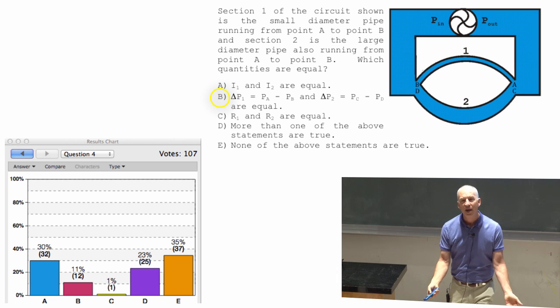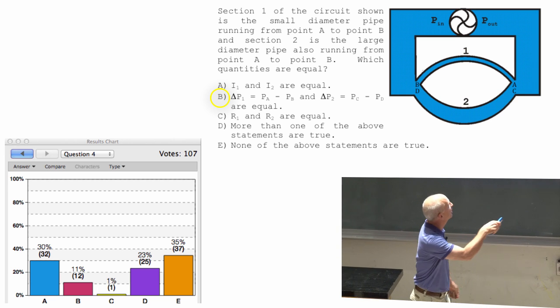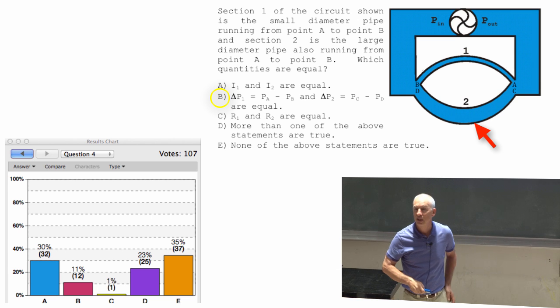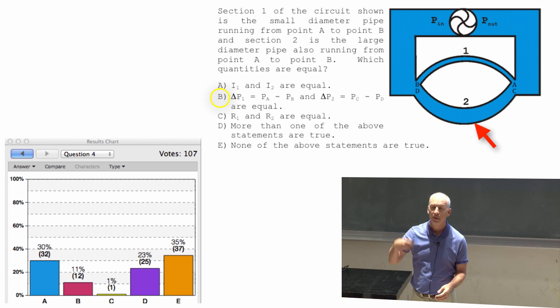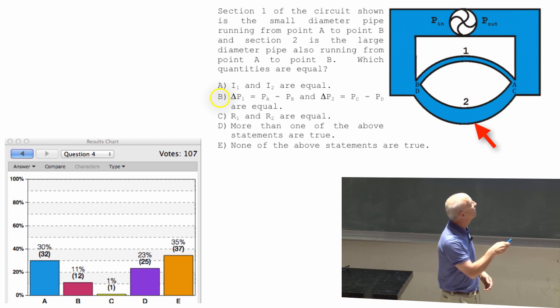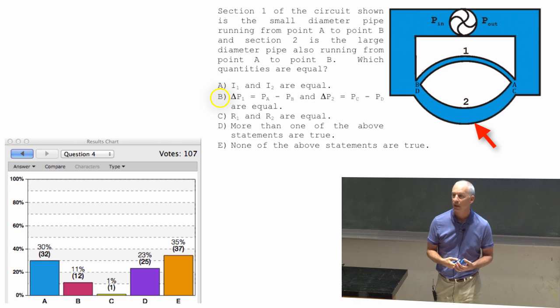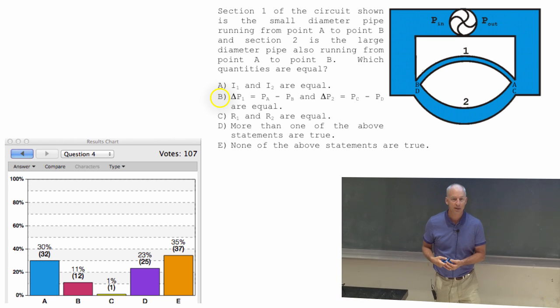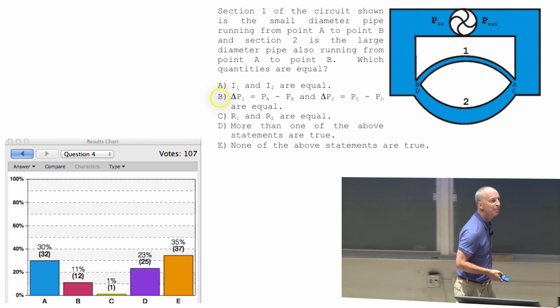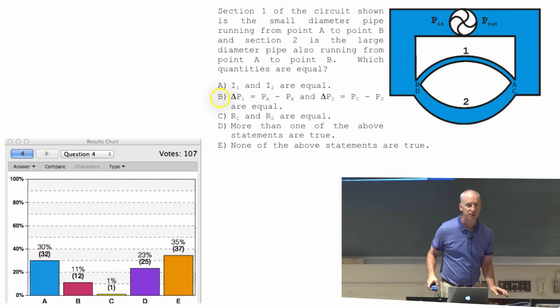You're going to pull a lot of water through the small one, the current's going to, sorry, through the big one, because its resistance is small. So the current through that straw is going to be big, and the current through the small straw is going to be small. It's not going to affect how much water gets into your mouth nearly as much as the big straw is.